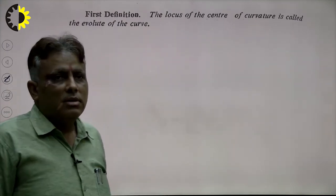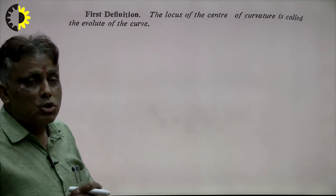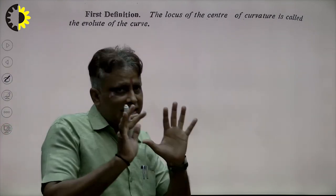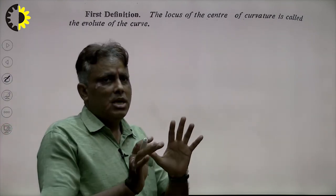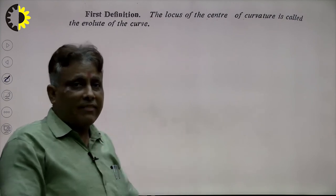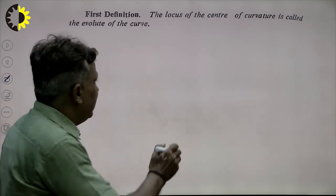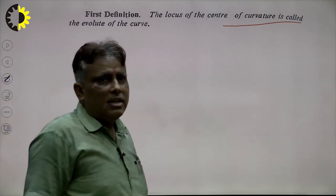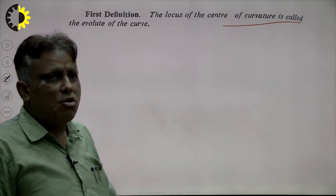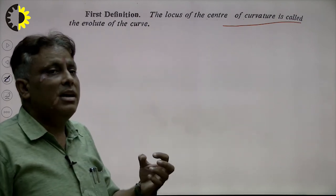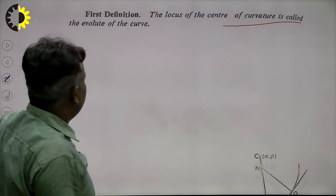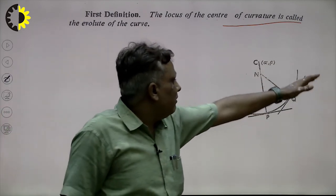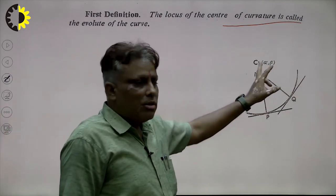Next topic: Evolute of the curve. Locus means path — when a particle moves in space, there exists a locus. The locus of the center of curvature is called the evolute of the curve.